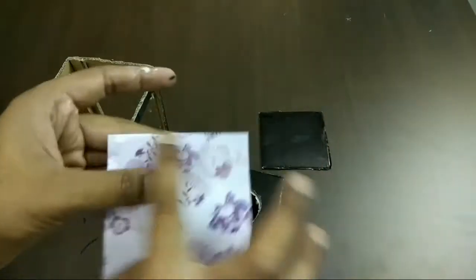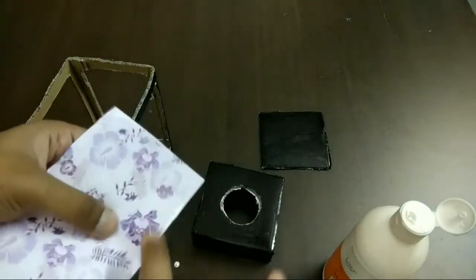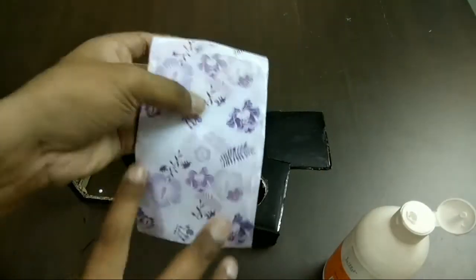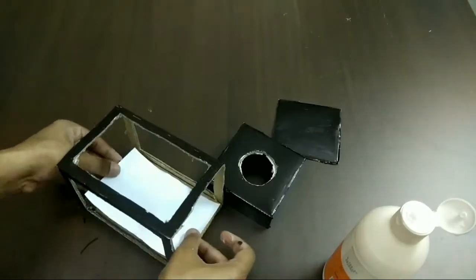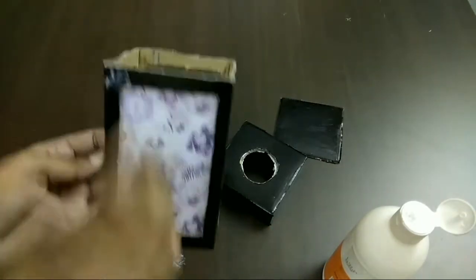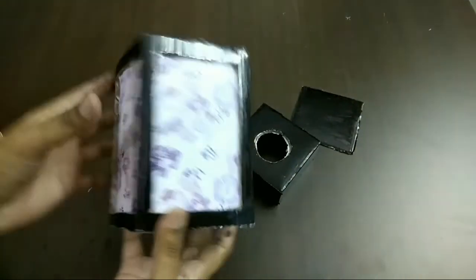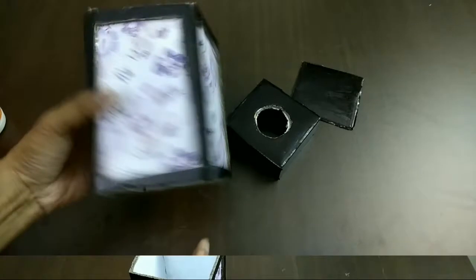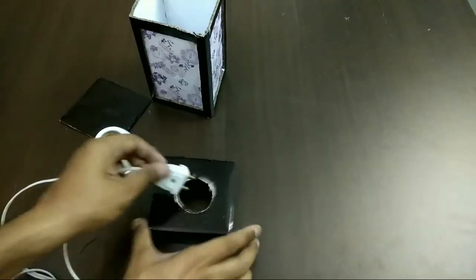And then you have to stick all the 4 parts which you have cut inside the top part of the lamp. Like this. This paper, you can use any paper. You can even use a white paper. You can draw something. You can even make it a starry lamp also.